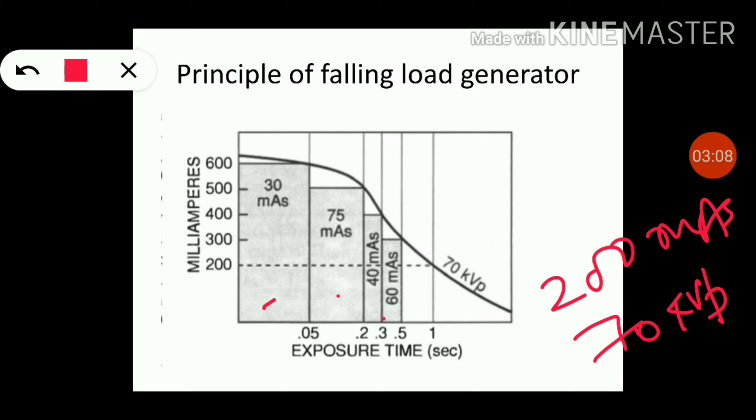The exposure will start beginning at 600 mA - this is the highest mA available here. Then drop the tube current to 500 mA when the 70 kVp line crosses the 600 mA line. Corresponding reduction of tube current will occur at 400 and 300 mA until the required 200 mAs has been achieved.